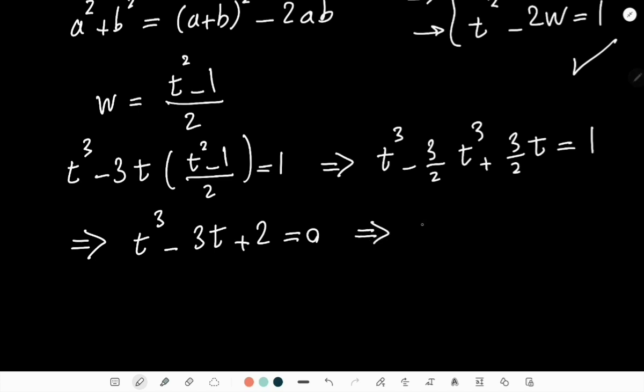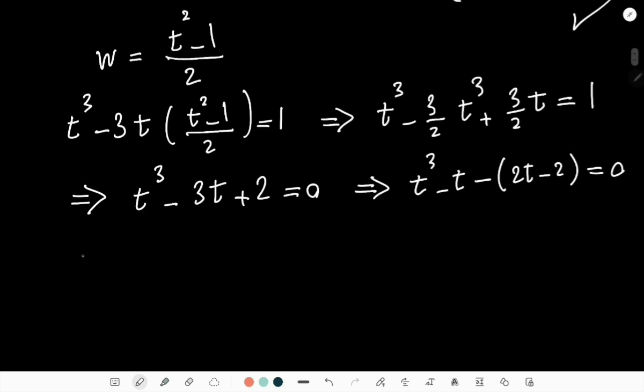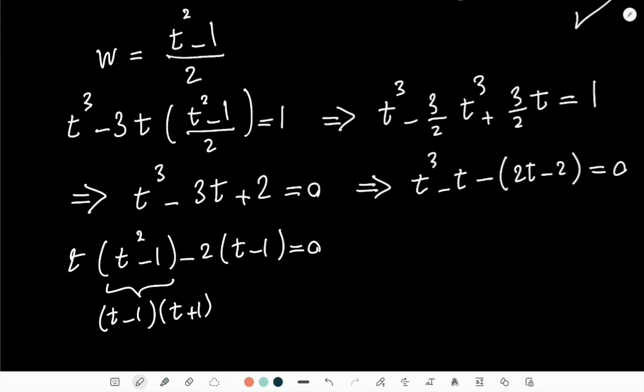because you can write t³ - t - 2t - 2 = 0. And that gives me t(t² - 1) - 2(t - 1) = 0. And that is, basically, this is nothing but (t - 1)(t + 1). And then we factorize based on t - 1.